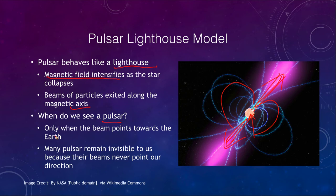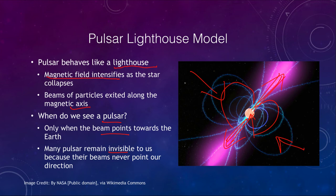We can see the pulsar only when the beam points towards Earth. If we are looking from another direction, we see no pulsar — the neutron star is there, but this is why many pulsars remain invisible to us, because their beams never point in our direction. Although we could technically detect them as a lone neutron star, which we will see later.